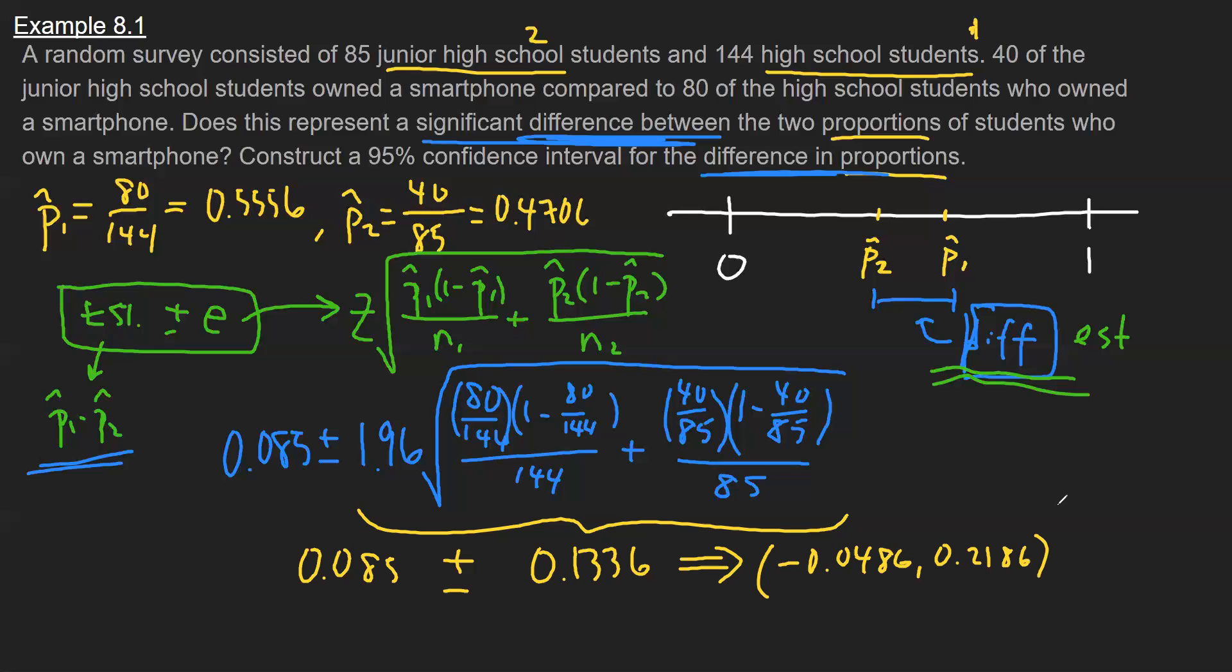Now you might be thinking, these are proportions, how can they be negative? Well remember, this confidence interval is not for the proportion, it's for this difference here, right? We're estimating this difference and we're seeing the size of that difference. And again, you also might think, well what does it mean for the distance between two things to be negative? Well it just means one's below the other.